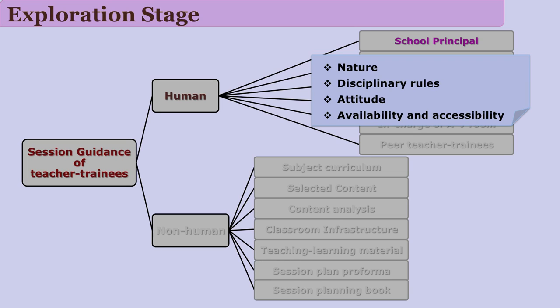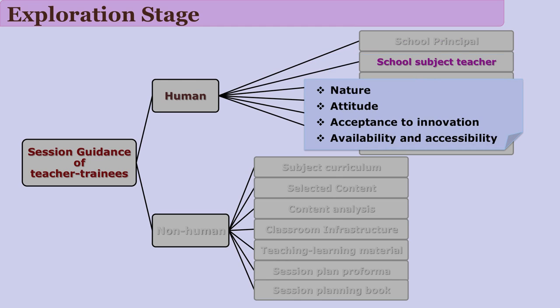After identifying human and non-human components, we need to write the strengths and weaknesses of each. For example, the school principal is an important factor — the nature, attitude, disciplinary rules, and accessibility of the principal are important. The subject teacher's nature, attitude, and attitude towards innovations are also important features, so we need to see the strengths and weaknesses of the subject teacher as well.